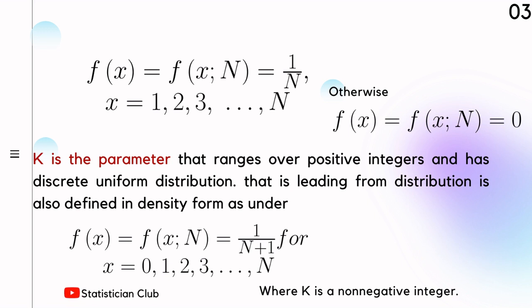And in case the random variable X takes values 0, 1, 2, and so on up to capital N, in such case, the PDF is f(x) = 1 over N plus 1.